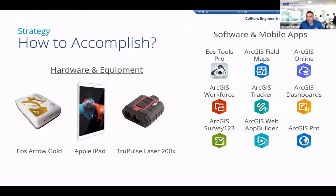We help our clients frame out their GIS projects by considering five core components of any GIS: hardware, software, people, data, and then business processes or organizational requirements. Today I'm going to really focus on the hardware and the software. Our typical equipment that we use is our EOS Arrow receivers paired with Apple iPads — this is our standard configuration for these types of mapping projects.